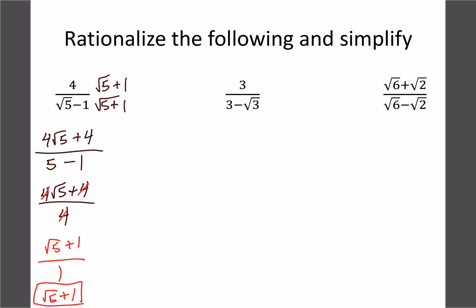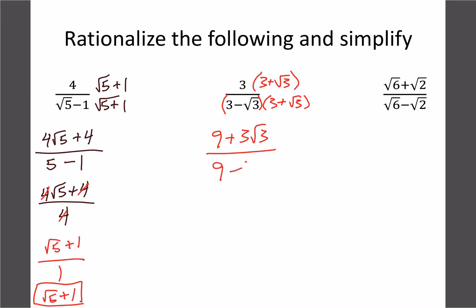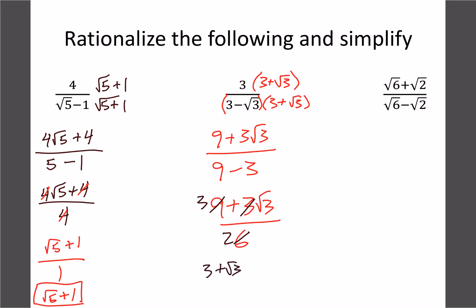The next example has 3 minus root 3 in the denominator, so the conjugate is 3 plus root 3. Multiplying the top gives 9 plus 3√3. Foiling the bottom gives 9 minus 3 — we don't need the middle terms — which equals 6. So we have 9 plus 3√3 over 6. We can cancel out a factor of 3 from each term, giving 3 plus √3 over 2 as our final answer.